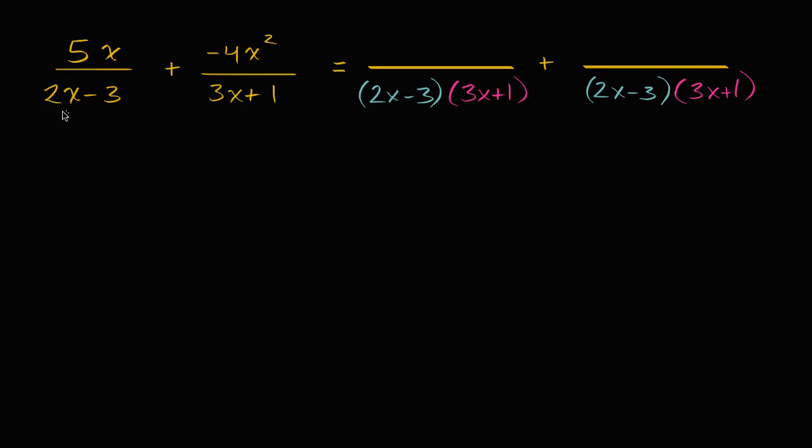And so to go from just a 2x minus three here in the denominator to a 2x minus three times 3x plus one, we multiply the denominator by 3x plus one. So if we do that to the denominator, we don't want to change the value of the rational expression. We'd also have to do that to the numerator.